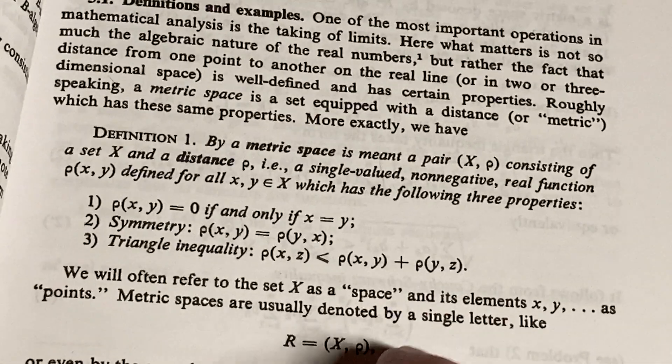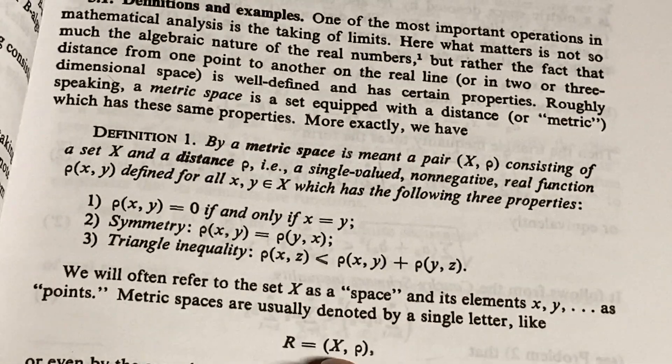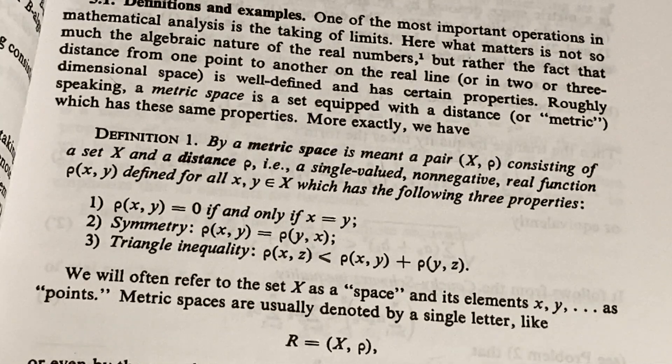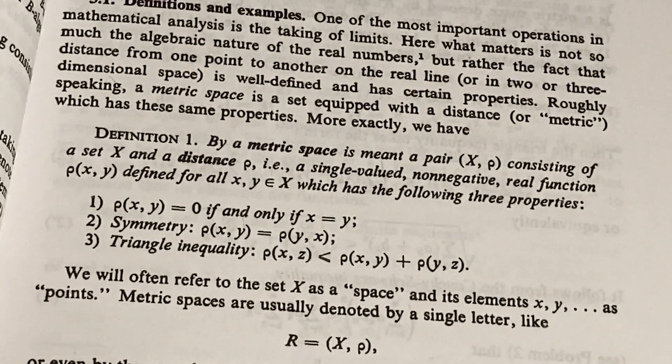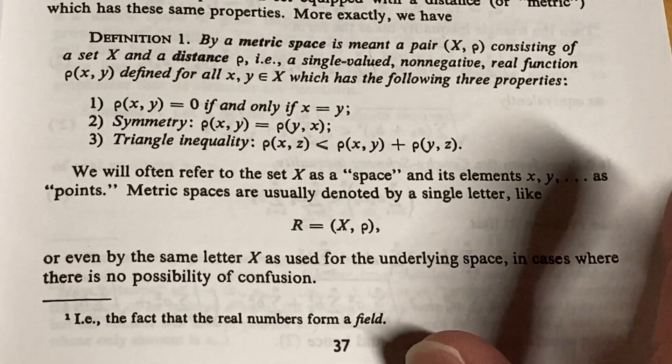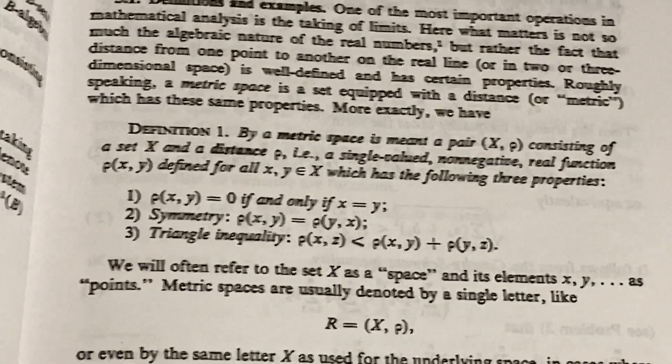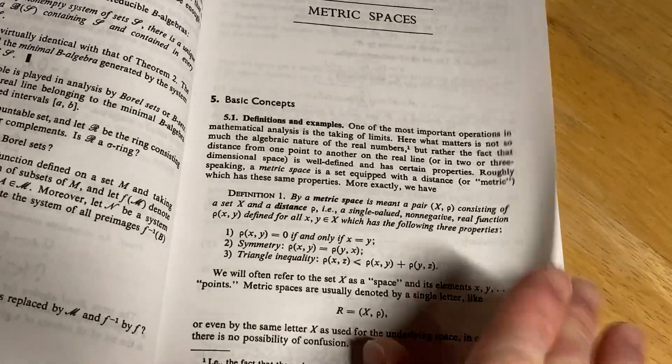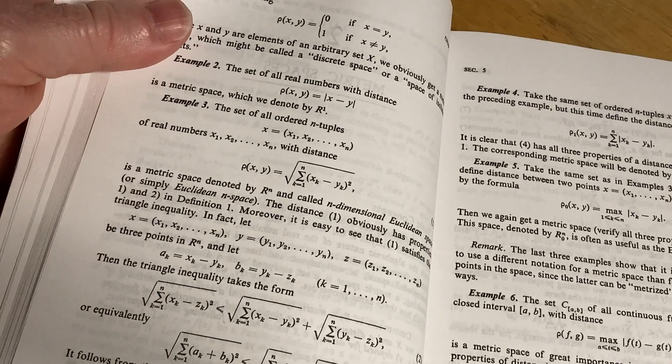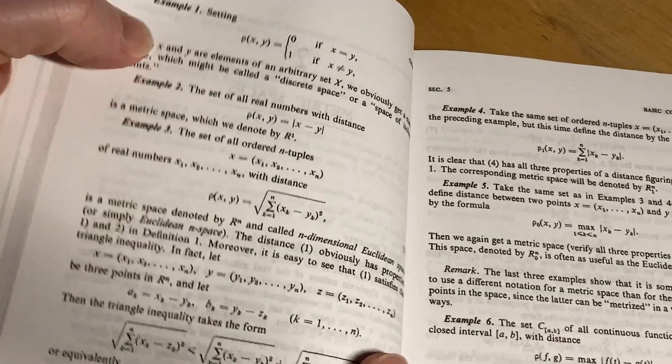Metric spaces are usually denoted by a single letter like r equals and then r is the x comma rho. Now, if the metric is needed, sometimes you'll emphasize it or even by the same letter x as used for the underlying space in cases where there is no possibility of confusion, right? Clarity is paramount. Math is already hard enough. The last thing you need is to be unclear. Pretty good stuff. And it's got examples, which is really, really cool. Look at all these examples. What a wonderful book. I'm getting goosebumps. I really like this book.